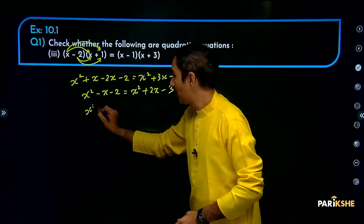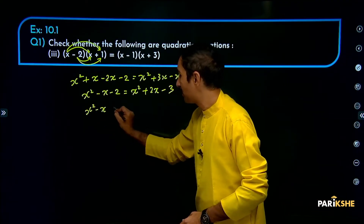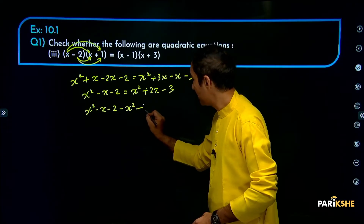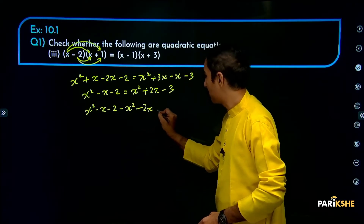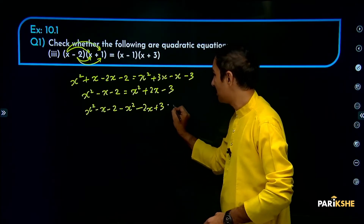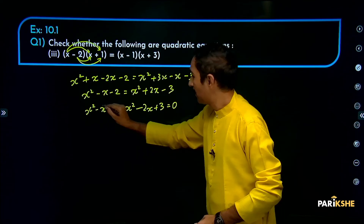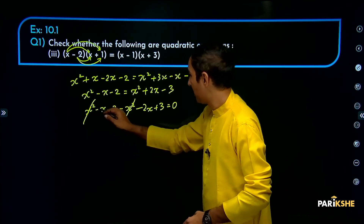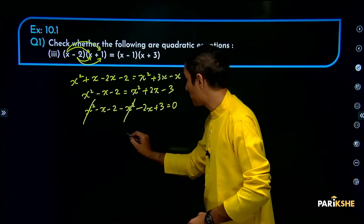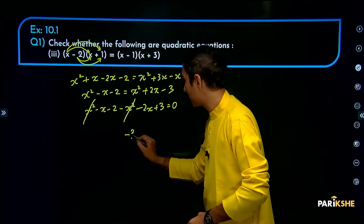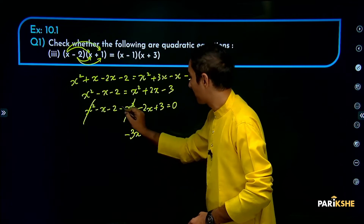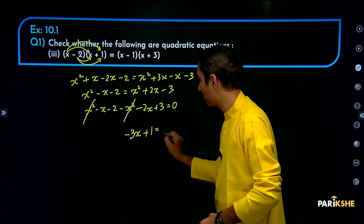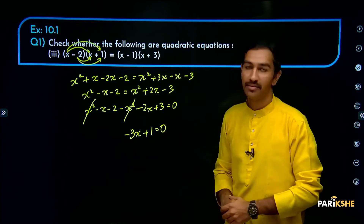Simplifying: x squared minus x minus 2 minus x squared minus 2x plus 3 is equal to 0. The x squared and minus x squared cancel. Combining x terms: minus x minus 2x = minus 3x. Constants: minus 2 plus 3 = plus 1. So the result is minus 3x plus 1 is equal to 0.